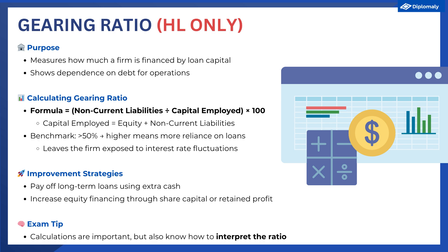A benchmark here is about 50%. Anything more than this — meaning if a firm is reliant on loan capital for at least half of its financing or more — might mean that the firm is overly reliant on loan capital, leaving them vulnerable to an increase in interest rates, which would result in them having to pay back more interest, thereby reducing their retained profit. To improve the gearing ratio, a firm either needs to reduce its non-current liabilities, such as by using excess cash to pay off long-term loans, or rely more on other sources of finance like retained profits or share capital. The business might go through a new share issuance to raise share capital, or it might pay less dividends and retain more of the profits instead.